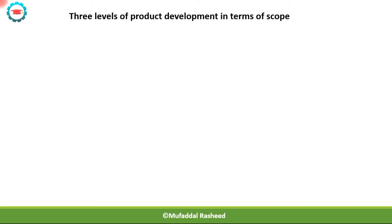Now we will have a look at the three levels of product development in terms of scope. Till now we have seen the process for new product introduction and development — that is when a totally new type of car has to be developed. But there are lesser versions of product development which also happen in organizations.